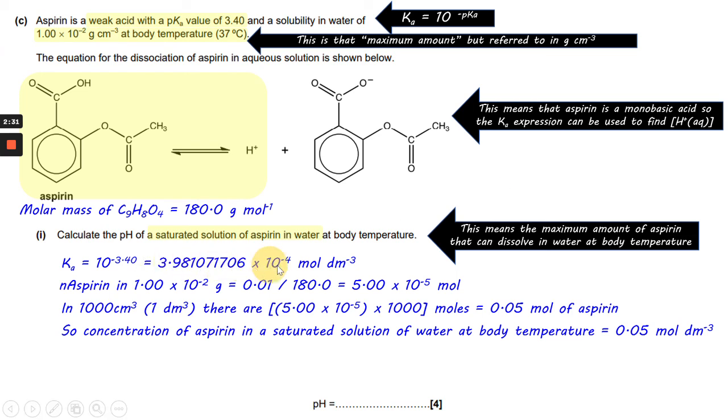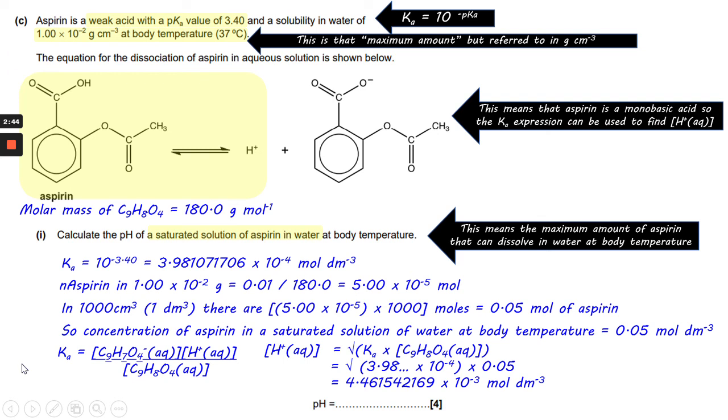We've already worked out what the value for Ka is earlier on, so what we need to do now is construct the Ka expression and rearrange it so H+ is the subject, so we can work out the pH as directed. So plugging the numbers in, that gives us 4.461542169. Notice I'm sticking to calculated values throughout here to try and keep it as accurate as possible.